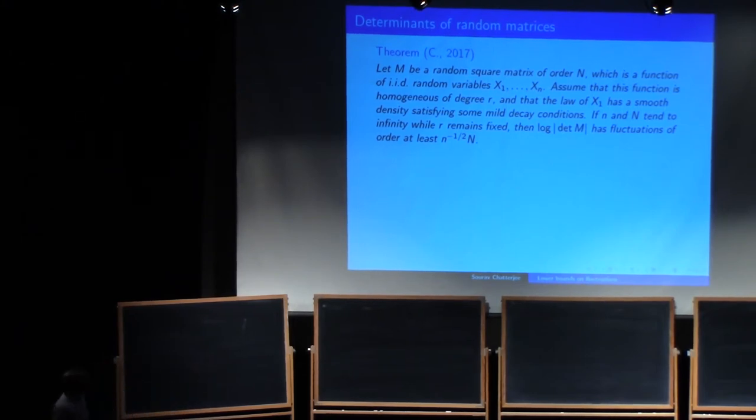So you see, if it's a Wigner matrix, then little n is of order capital N squared. And if it's some other matrices, Toeplitz matrix, then little n and capital N are of the same order.